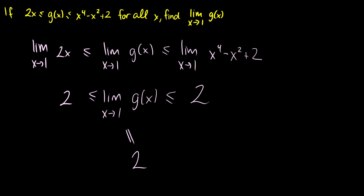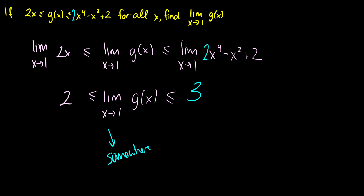Now let's do a hypothetical. Let's assume maybe the right bound was 2 to the x to the 4. In that case, what we'd get on the right side would be 2 minus 1 plus 2, which equals 3. Now instead of having an exact value, we know that the limit as x approaches 1 of g(x) is somewhere between 2 and 3. So if you get this on an exam and wonder why you didn't get an exact number, it might just be that you weren't supposed to — you needed to find the interval it lies in.